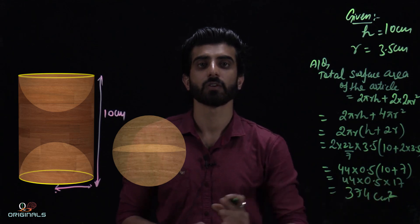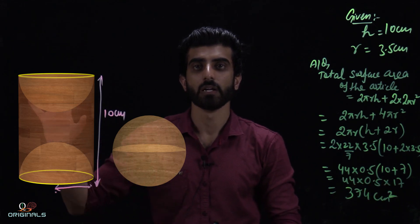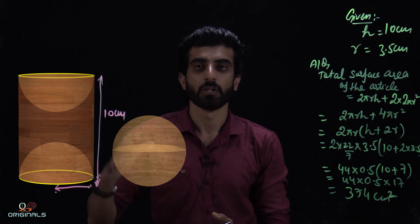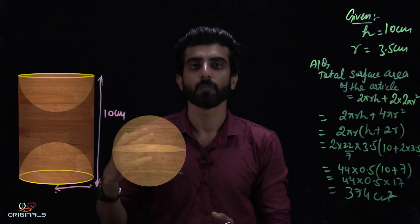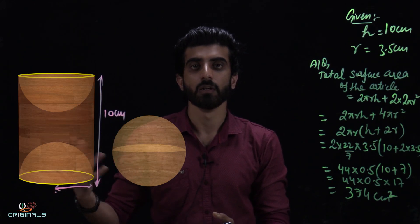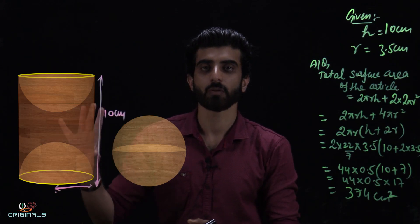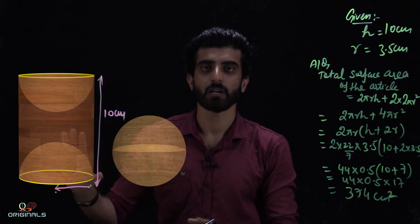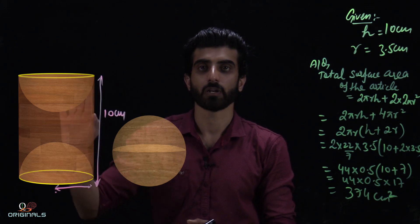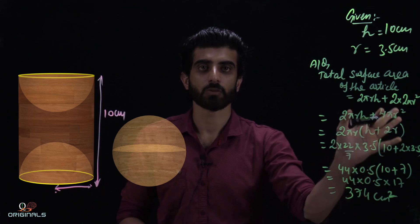The total surface area of the article comes out to 374 square centimeters. Here we calculated the curved surface area of the cylinder plus the curved surface area of both the scooped-out hemispheres on two sides.